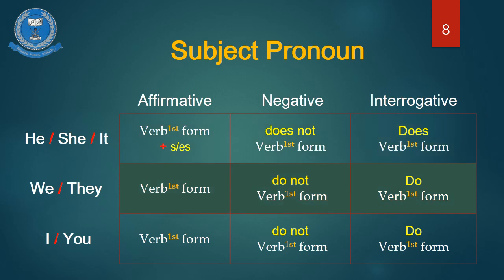For plural subject pronouns like we or they — for an affirmative sentence, we use only the first form of verb; for negative, we use 'do' as our helping verb along with the first form of verb.